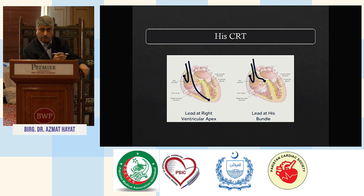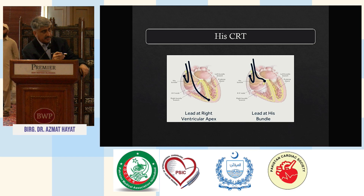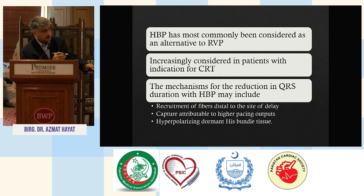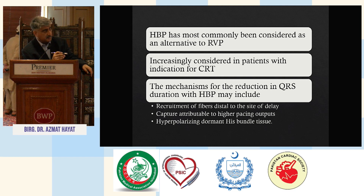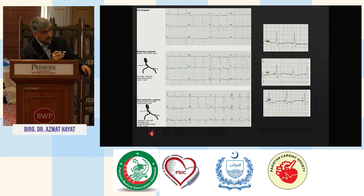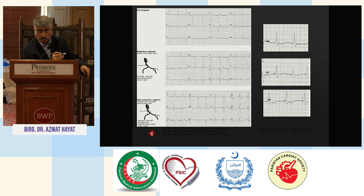The second modality of pacing is His bundle pacing. In His bundle pacing, we implant a lead at the level of the His bundle with the idea of capturing it to produce as physiological pacing as possible. The mechanism is reduction in QRS duration. Looking at the ECGs: the top ECG is pre-pacing, and below is post-His bundle pacing — you can see the QRS duration has become narrow, the width is narrow, and the QRS has sharpened.